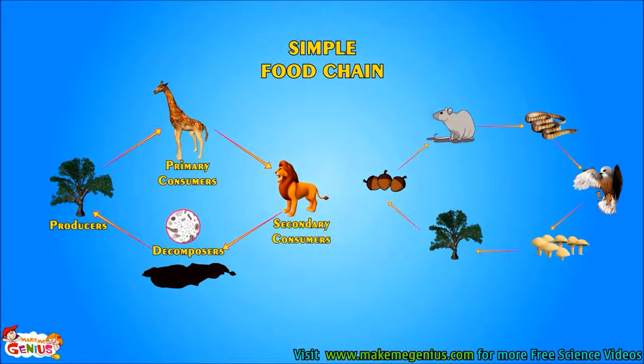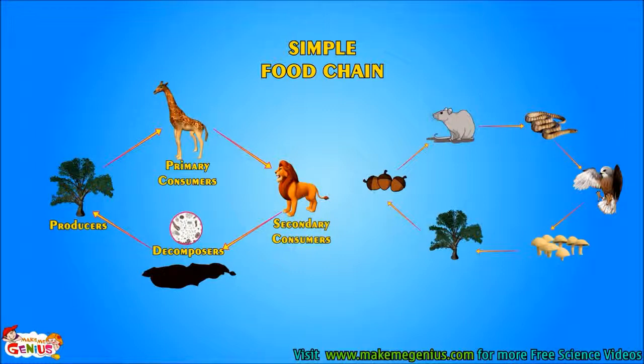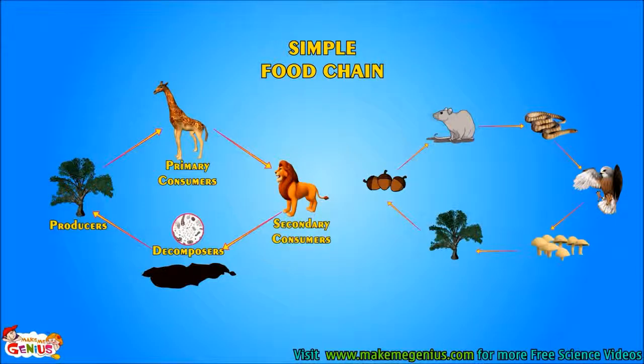The food chains we saw, which have one producer, one primary consumer, and one secondary consumer, are called simple food chains.